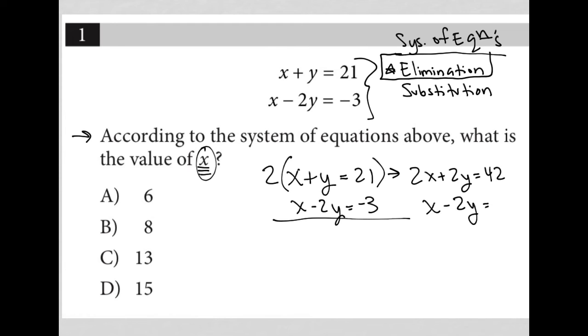now you can see that my positive 2y and my negative 2y will eliminate or cancel out. That's exactly what they do. Then I'm left with 2x plus x, which is 3x, and 42 minus 3, which is 39. I can divide both of those by 3.